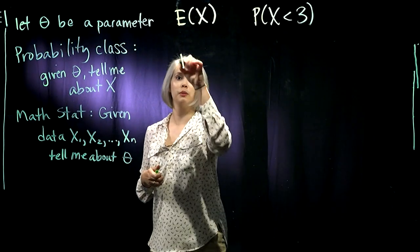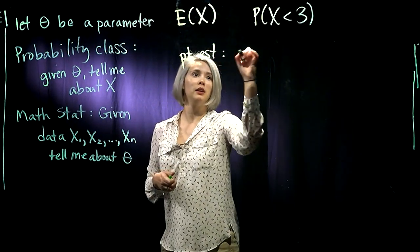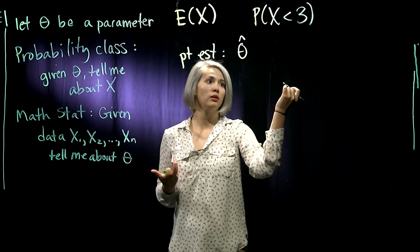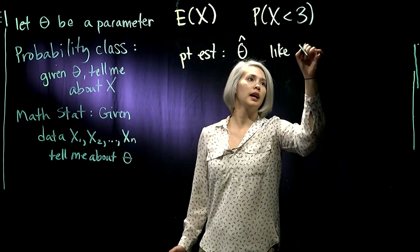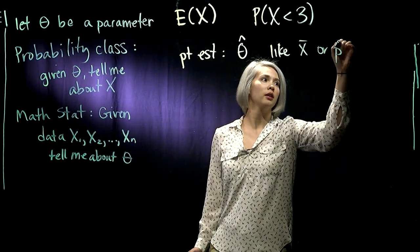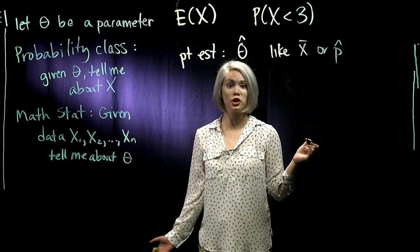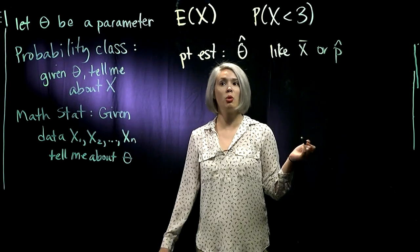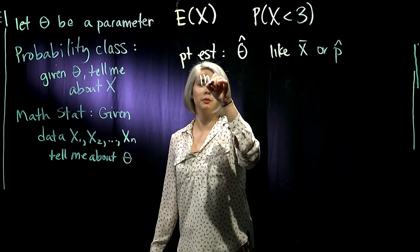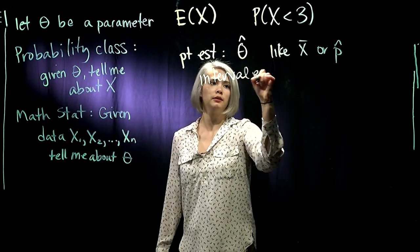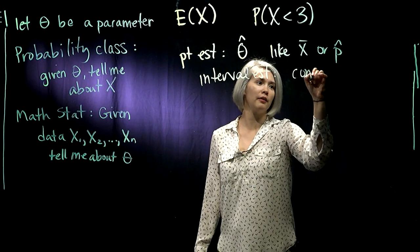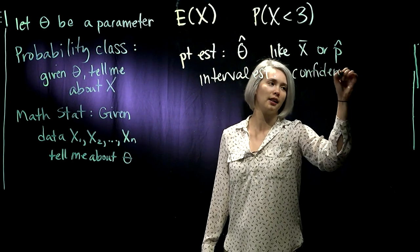Maybe that means we're looking for the point estimate of θ, like θ̂. That could be X̄ or the sample proportion, something like that. Or we could be looking for interval estimates. We know about confidence intervals from our applied stat classes.